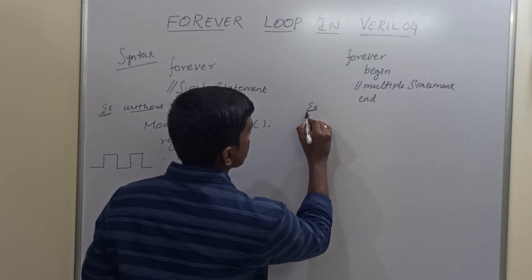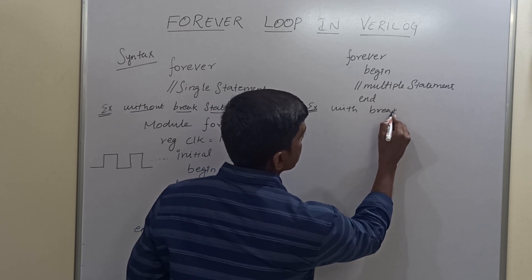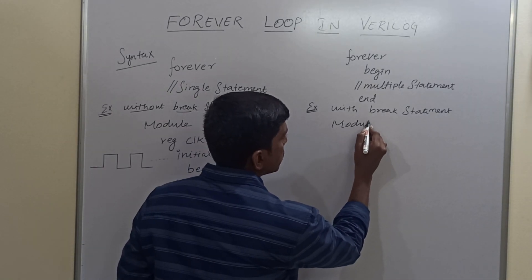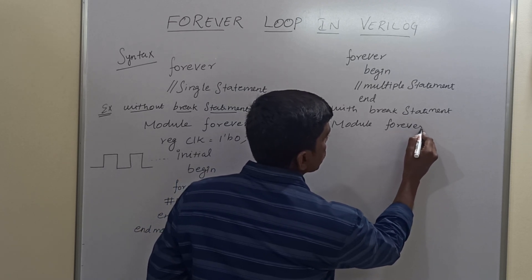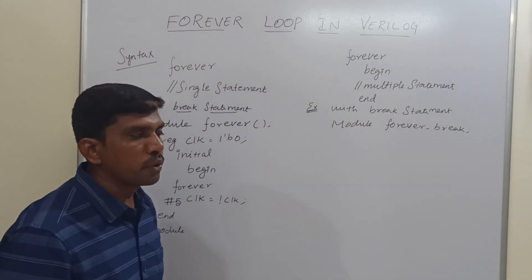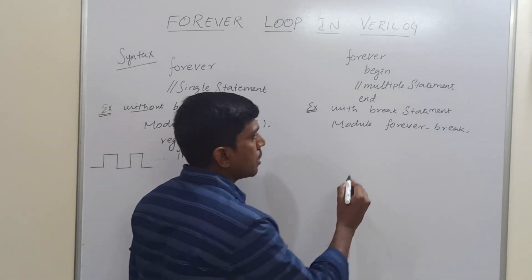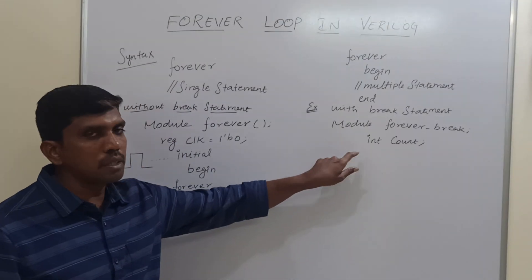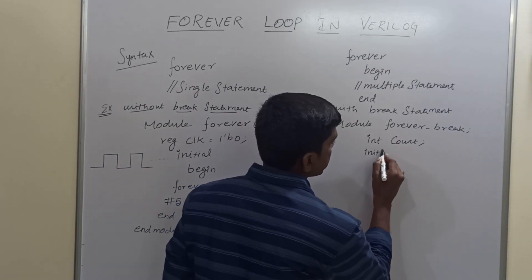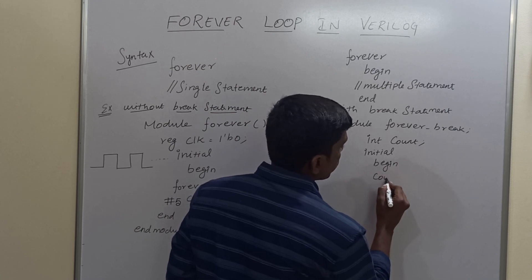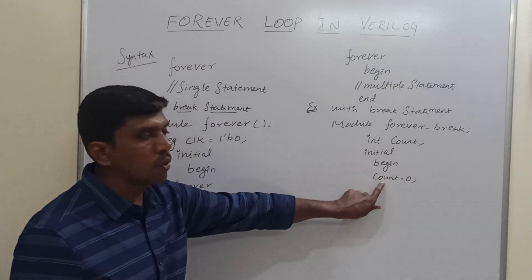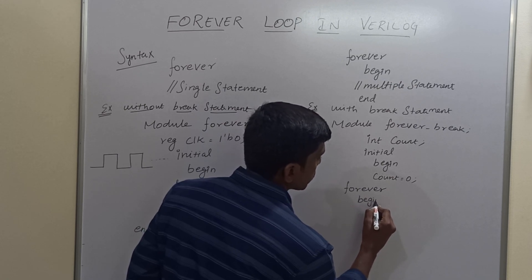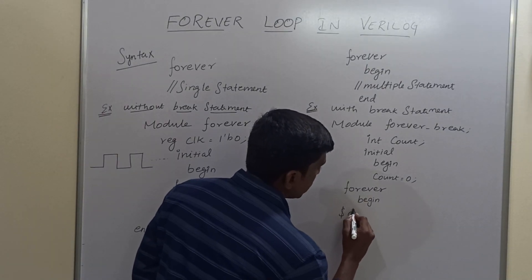The second example uses a break statement within a forever loop. You write 'module' then the module name 'forever_break'. In this program I am going to count values. The variable 'count' is declared as an integer. Then in the initial begin block, the count value is initially set to 0. Then the forever loop begins — it is a multi-statement forever loop, so I start with begin. First I display the count value using $display.